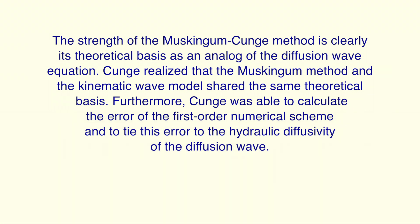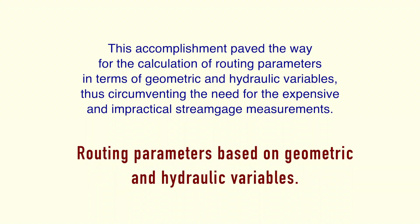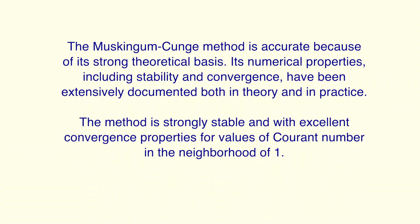Cunge realized that the Muskingum method and the kinematic wave model shared the same theoretical basis. Furthermore, Cunge was able to calculate the error of the first-order numerical scheme and to tie this error to the hydraulic diffusivity of the diffusion wave. This accomplishment paved the way for the calculation of routing parameters in terms of geometric and hydraulic variables, thus circumventing the need for expensive and impractical stream gauge measurements.